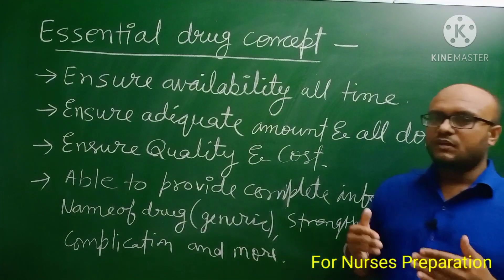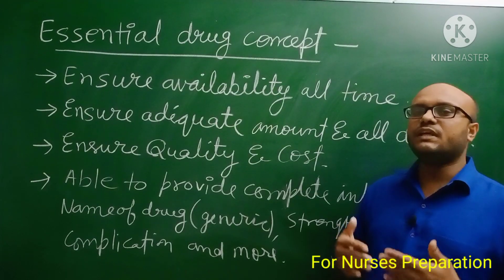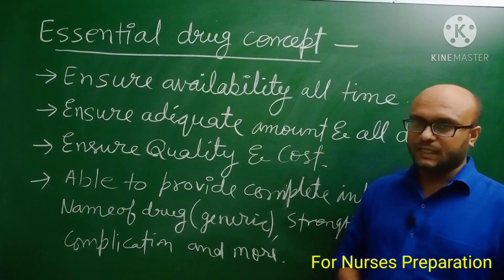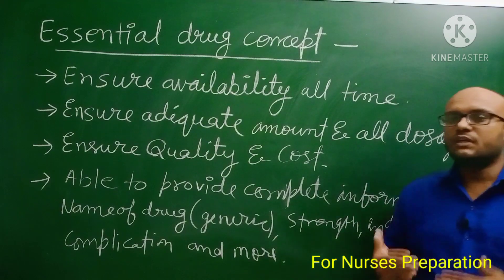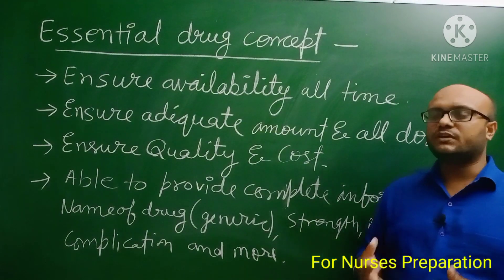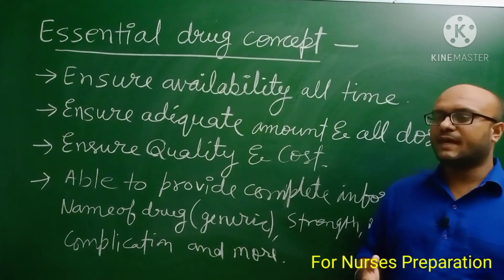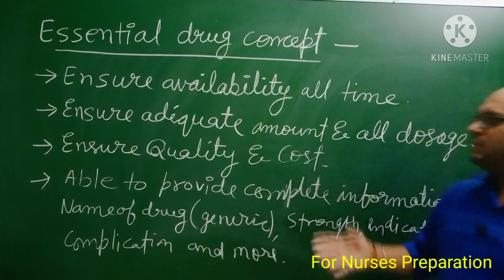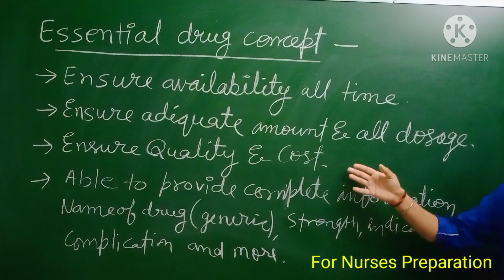Now let's talk about the essential drug concept. First is ensure availability all the time — we prefer to add drugs which are available all the time in our community, state, or country. Second point is ensure adequate amount and doses — we prefer to include drugs available in all forms and all doses, like for children and for adults.